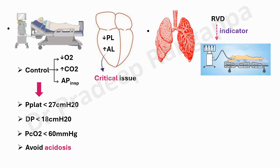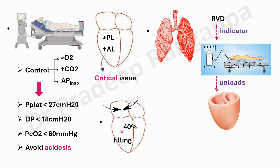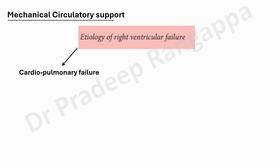Proning has been shown to reduce RV afterload. Even early proning in patients with significant RV strain is beneficial. Atrial contraction contributes 40% of filling, so any atrial arrhythmia must be mitigated. Maintaining AV synchrony and preventing supraventricular arrhythmias is very important in reducing RV stress. Tachycardia must be avoided, and atrial fibrillation or flutter must be managed very aggressively.